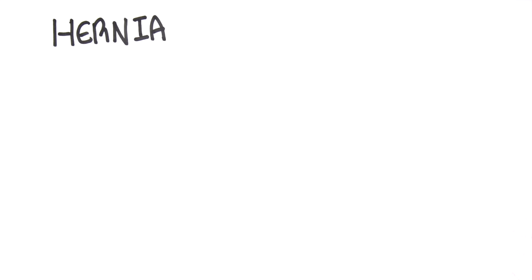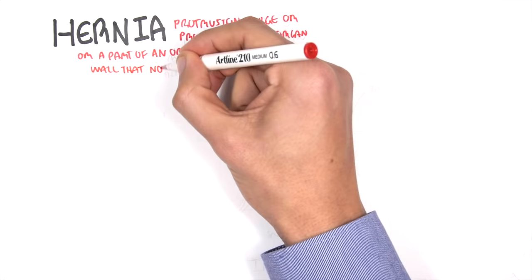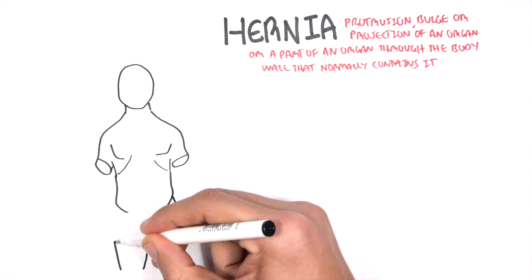In this video we're going to talk about hernia, specifically inguinal hernia. We're going to look at the signs and symptoms, the risk factors, and how it actually happens and how we differentiate between the different types of inguinal hernias. Hernia itself is defined as a protrusion, bulge, or projection of an organ or part of an organ through the body wall that normally contains it. There are different types of hernias, divided mainly into internal and external. We will mainly be talking about external hernias.